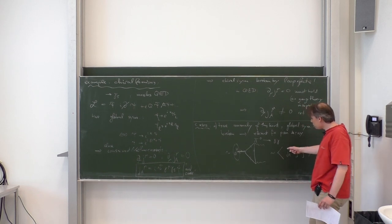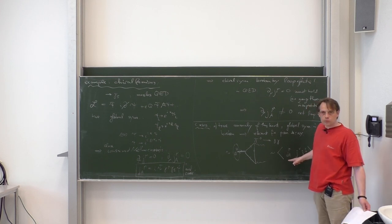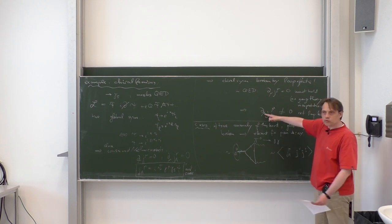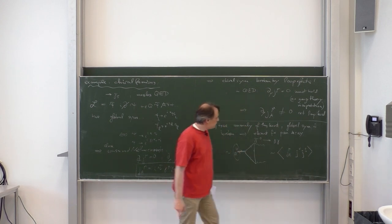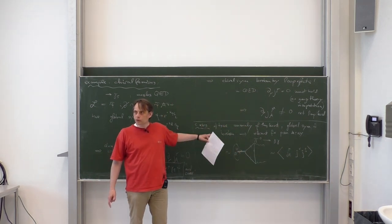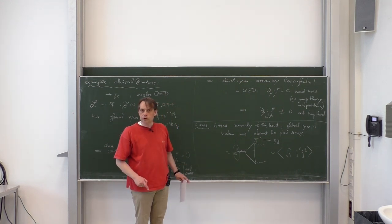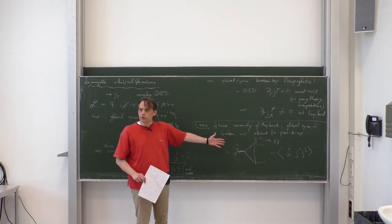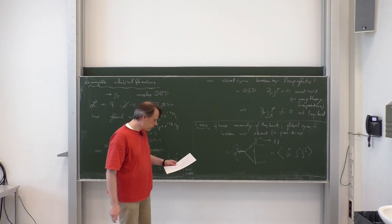Prior to knowing about this anomaly, people noticed a contradiction between this argument and the measured pion decay — a discrepancy between this way of looking at pions and the measured outcome. The anomaly is actually very important. In this way you can see you measure directly the effect of the anomaly for chiral symmetry.